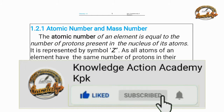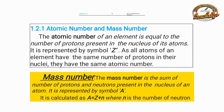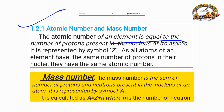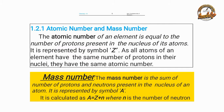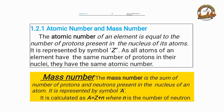Bismillahirrahmanirrahim. Assalamu alaikum. Now we are going to talk about atomic number and mass number. The definition of atomic number of an element is equal to the number of protons present in the nucleus of an atom. It is represented by Z.